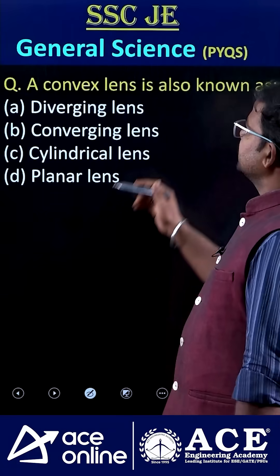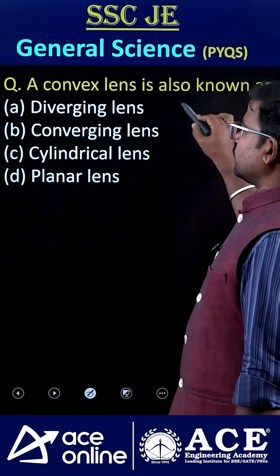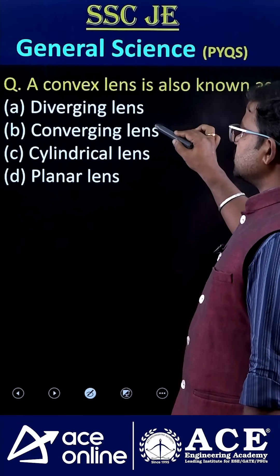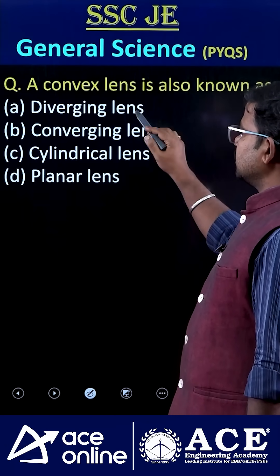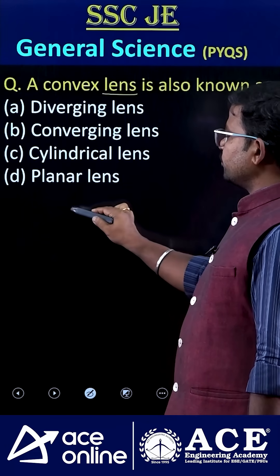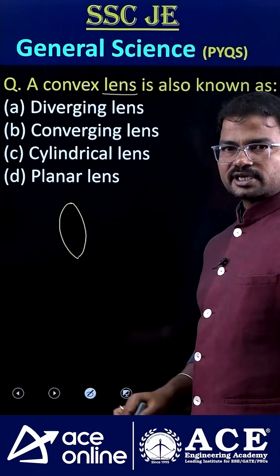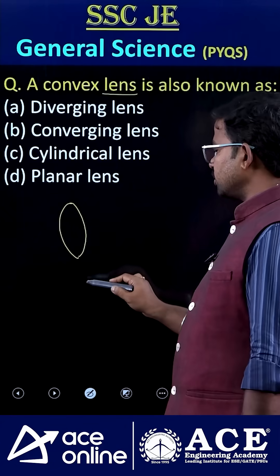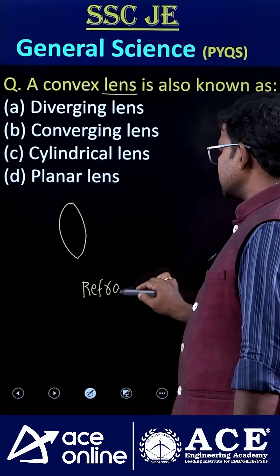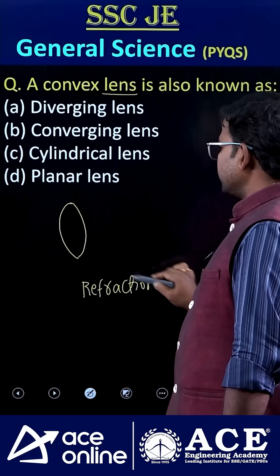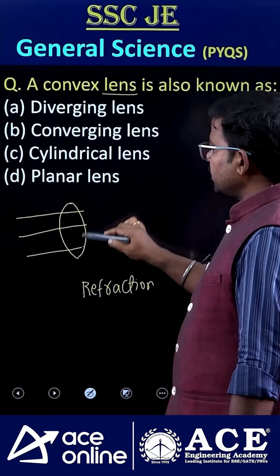Welcome to ACE Online. A convex lens is also known as a converging lens. If you consider a convex lens, it looks like this — the name of the phenomenon here is refraction. When light is passed through this convex lens, refraction occurs.